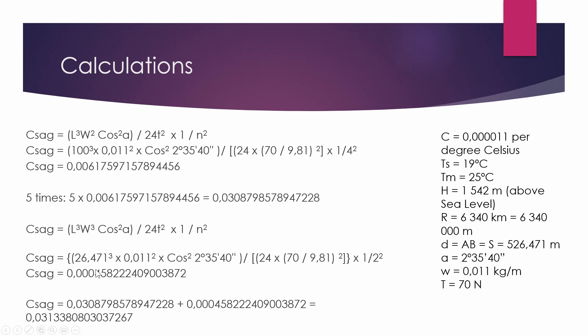Then for the 26.471, it's the exact same, except that the distance is different, and our n will be different because there are three people in that section. And for that, we'll also get this value, and then we add them together to get our total sag correction.